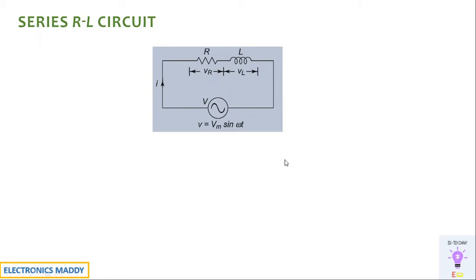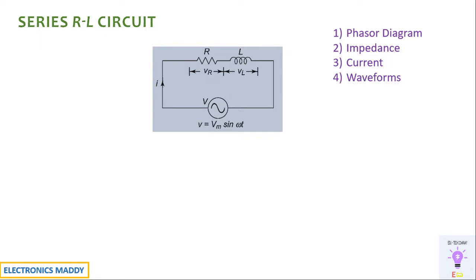So it's very important to see the behavior when a resistor and inductor are connected together in series — end to end — connected to an AC supply. We're going to see the phasor diagram, impedance, current nature, waveforms, power, power triangle, and power factor. If you haven't watched the individual resistor and inductor videos, please watch them — the links are in the description — as this is an extension of those concepts.